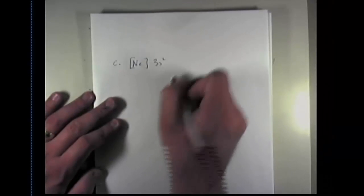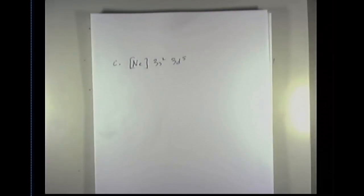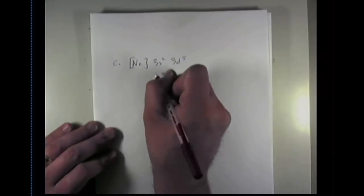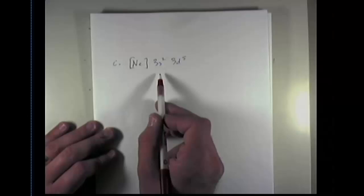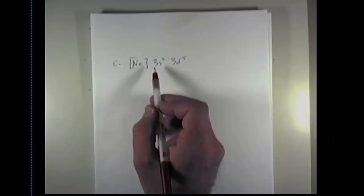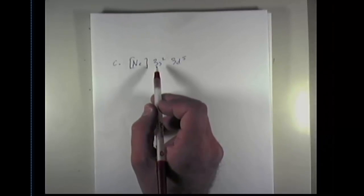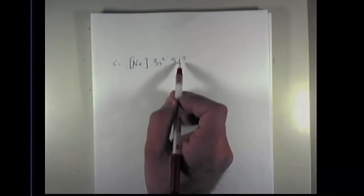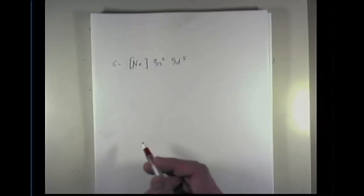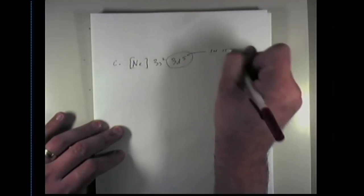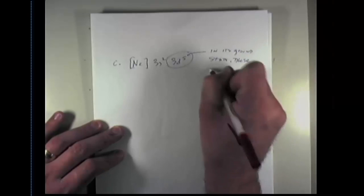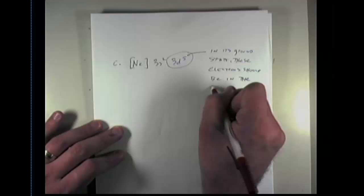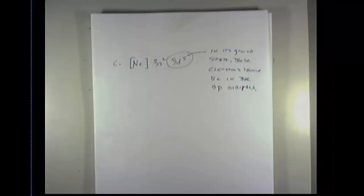For the fun of it, we'll now do question C. It gives me the electron configuration of neon, 3s2, 3d5. Neon, if we look at the periodic table, is element number 10. As we go after neon, we hit elements 11 and 12 in the 3s orbital block. That looks just fine, two electrons filling that. Now if we were to continue left to right, the next orbital that we would be hitting would be the 3p orbitals. However, the next electrons that we see are all the way in the 3d orbitals, which don't begin until you hit element number 21. So what this means is in its ground state, these electrons should be in the 3p orbitals. And that answers that question.